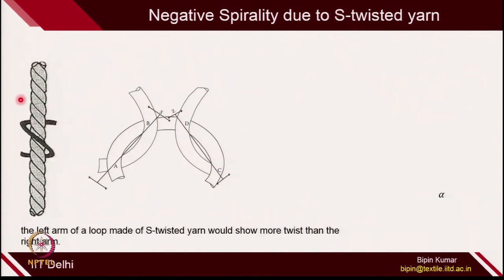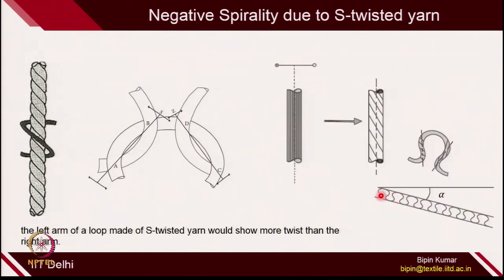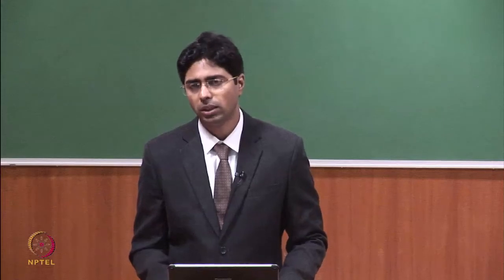When you are using S twisted yarn, on the left side you are providing additional S twist and on the right side you are providing Z twist. So on the left yarn, you will be having more twist, and on the right side, you will be having less S twist. Because of that, the courses will bend in the opposite way, because the right side will become less twisted and will bend more. So all loops of that particular course actually follow the sequence of a spiral. This is negative spirality. You have seen how loop formation not only disturbs the straight segment of yarn but also its twist amount, and once the twist is disturbed, the fabric does not remain stable and the loops actually form a spiral nature.